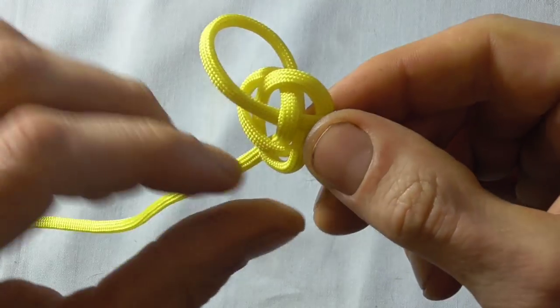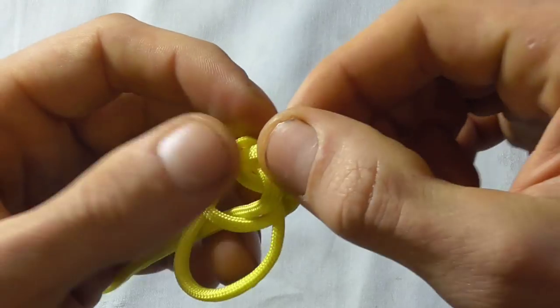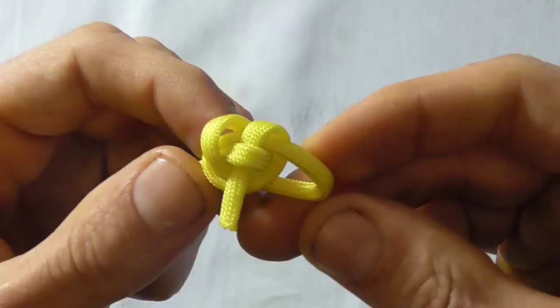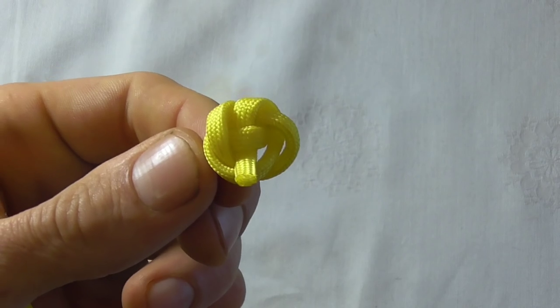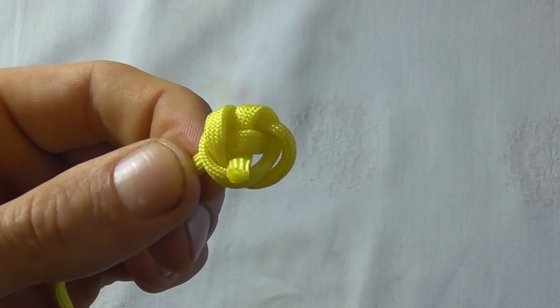So we just feed the slack through the knot from one end to the other. So that's the basic shape of the knot and I'm just going to give it one more tighten and show you the finished product.